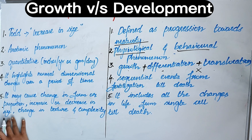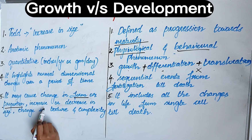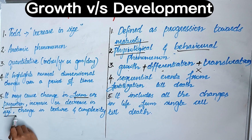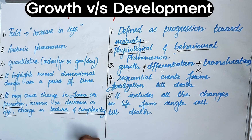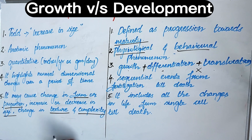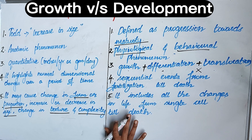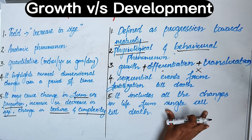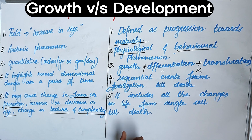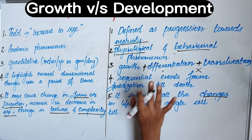Fifth difference: growth may cause change in form, proportion, and there is an increase or decrease in size and change in texture and complexity. Whereas development is a change that occurs in the life of a subject from formation of a single cell to death — from the time of fertilization of the ovum forming a single cell till death, all the changes we see as development.